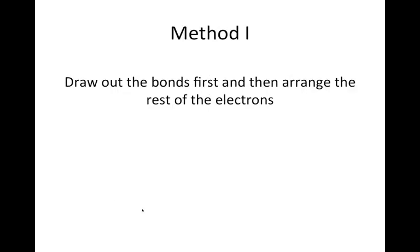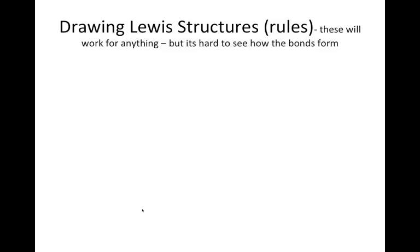For method one, what you do is you draw out the bonds first, and then rearrange the rest of the electrons to make sure that you've used them all up. There are a number of rules that you can use to do this, and they'll work for anything, but it's really hard to see how the bonds form.